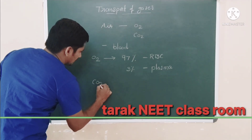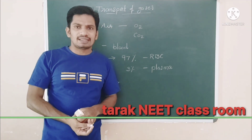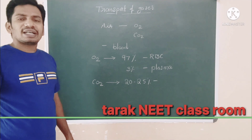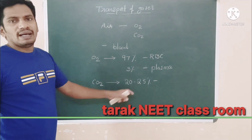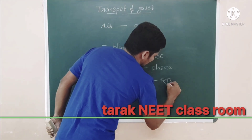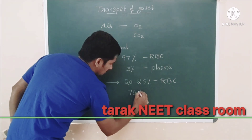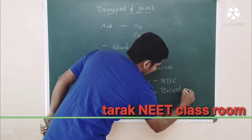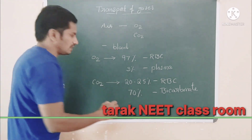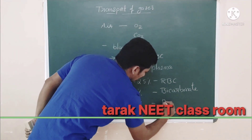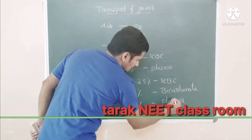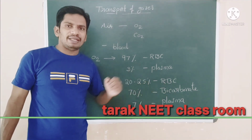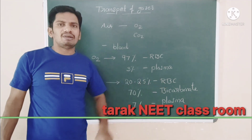In the same way, carbon dioxide from tissue to the respiratory organs: nearly 20 to 25% of carbon dioxide is transported through the blood via RBC. And 70% — the major percentage — of carbon dioxide is transported in the bicarbonate form. The rest, only 7%, is transported through the plasma. So 7% of CO2 is transported via plasma, 70% is in bicarbonate form, and 20 to 24% is in the form of RBC.